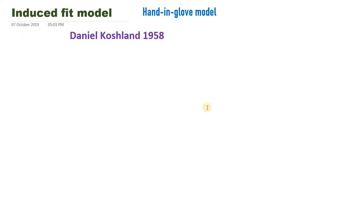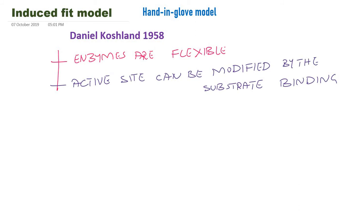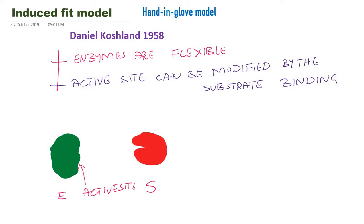The induced fit model is also known as the hand-in-glove model, proposed by Daniel E. Koshland in 1958. According to this model, enzymes are flexible and the active site can be modified by substrate binding. Looking at the enzyme and substrate here, the active site is not initially complementary to the substrate. When the substrate binds to the enzyme, it induces conformational changes in the enzyme.